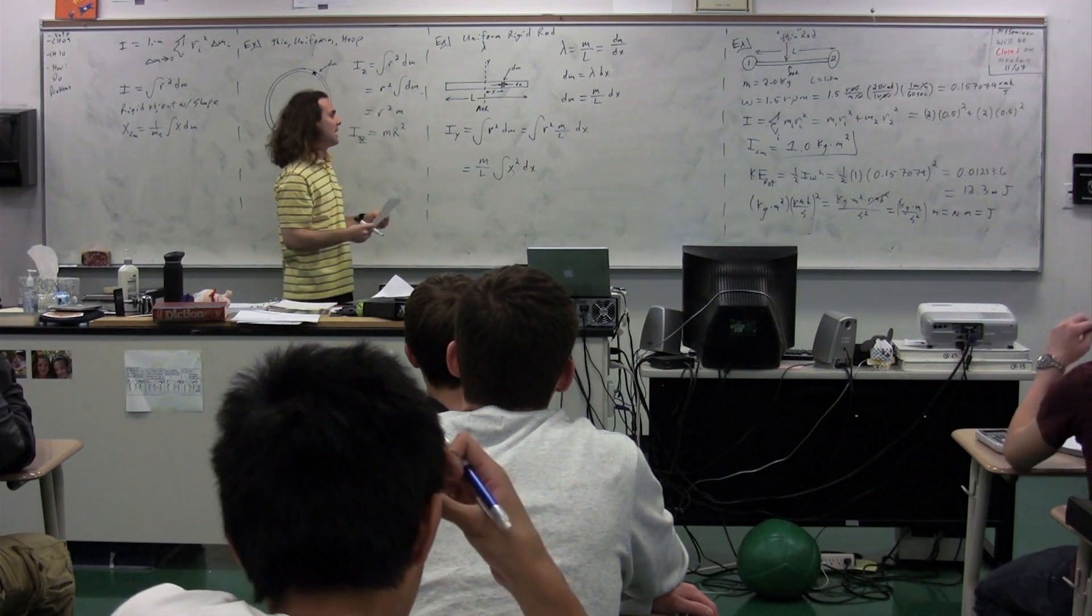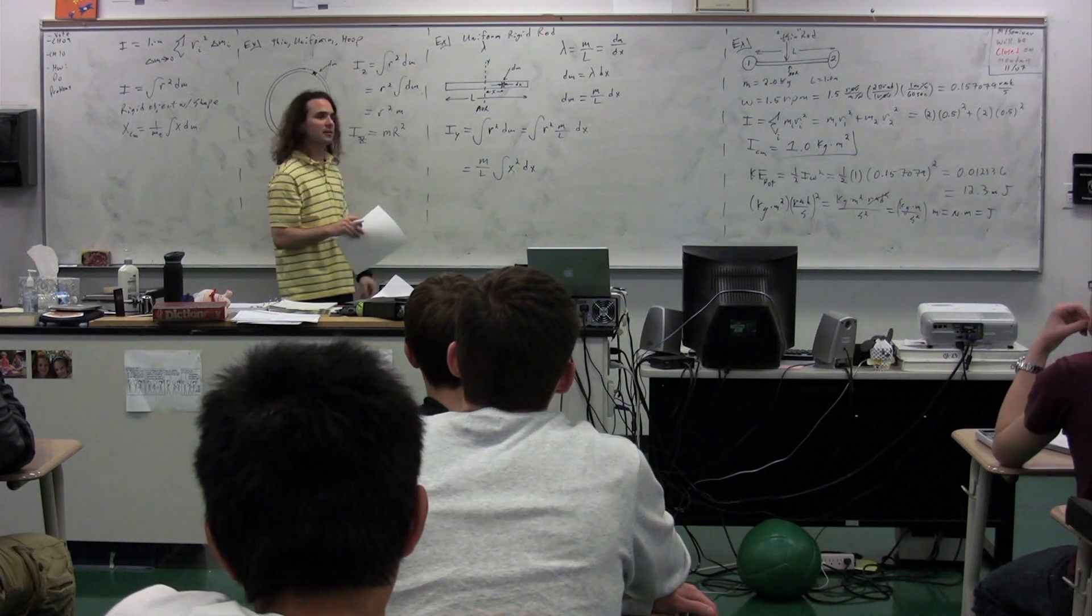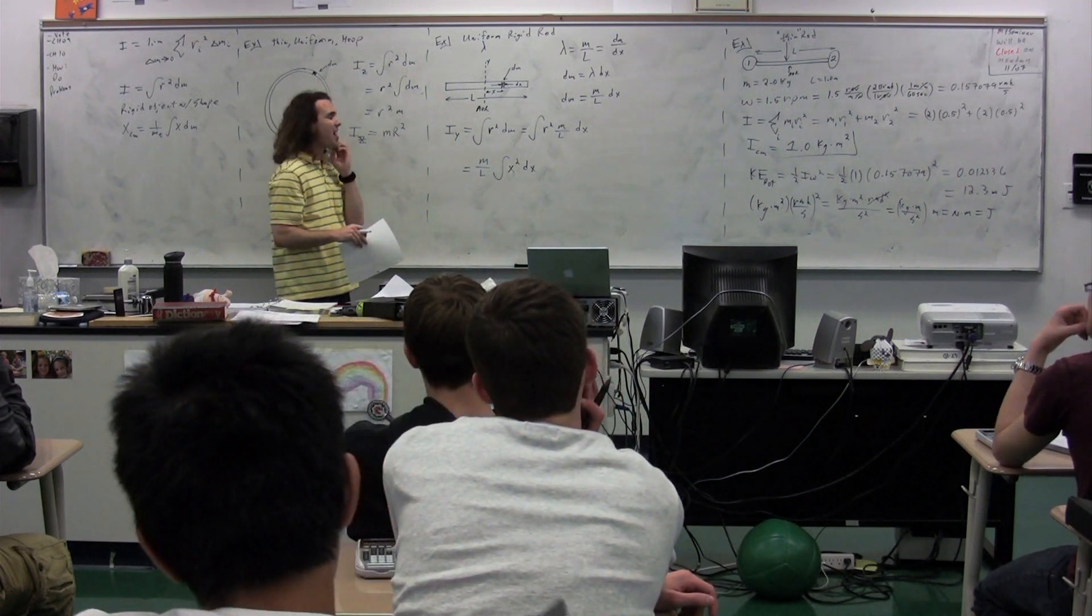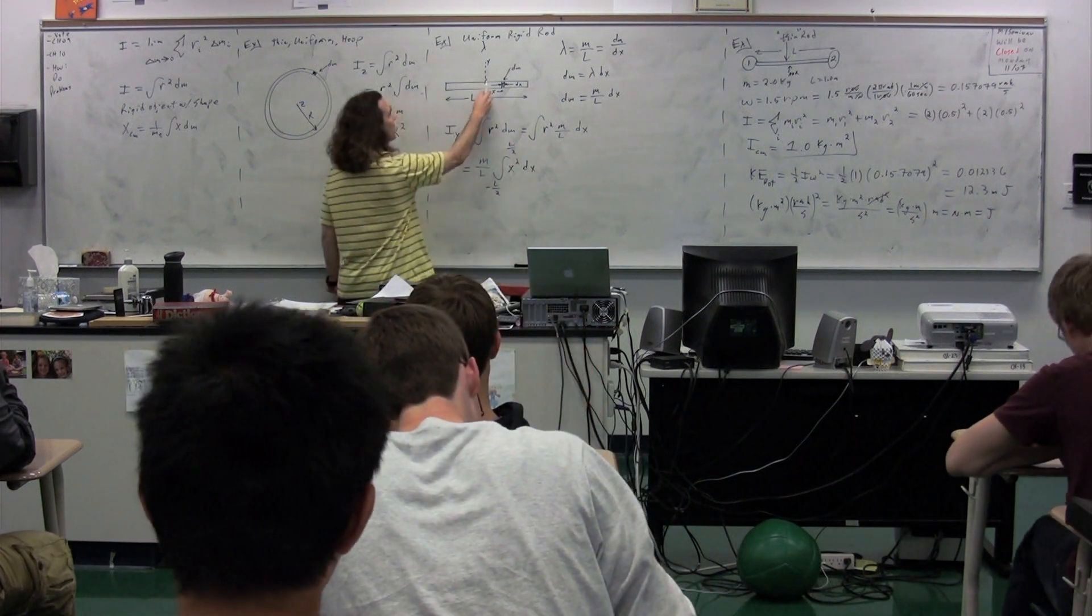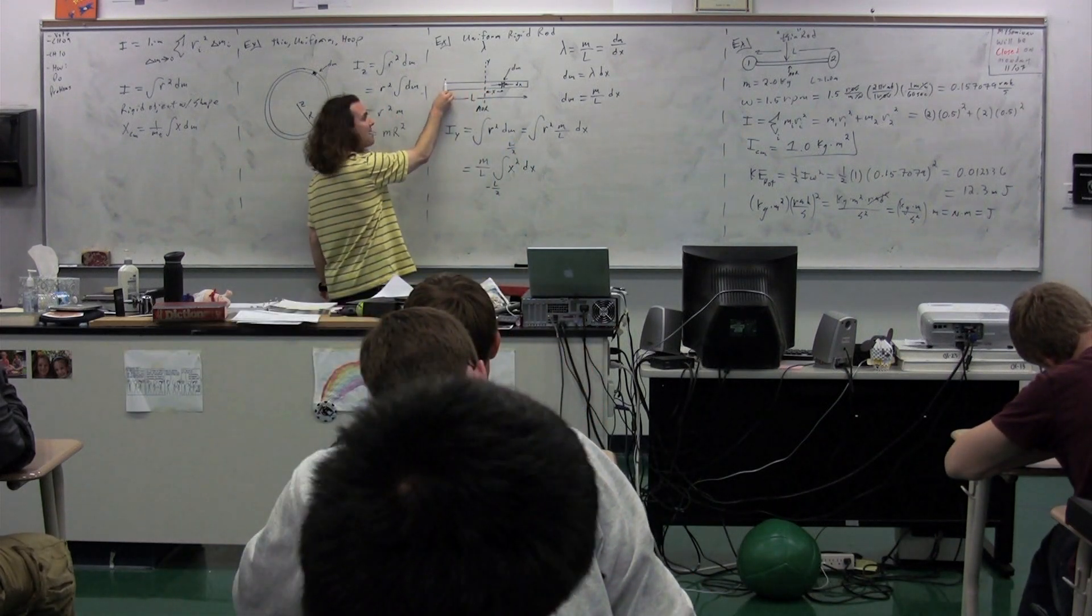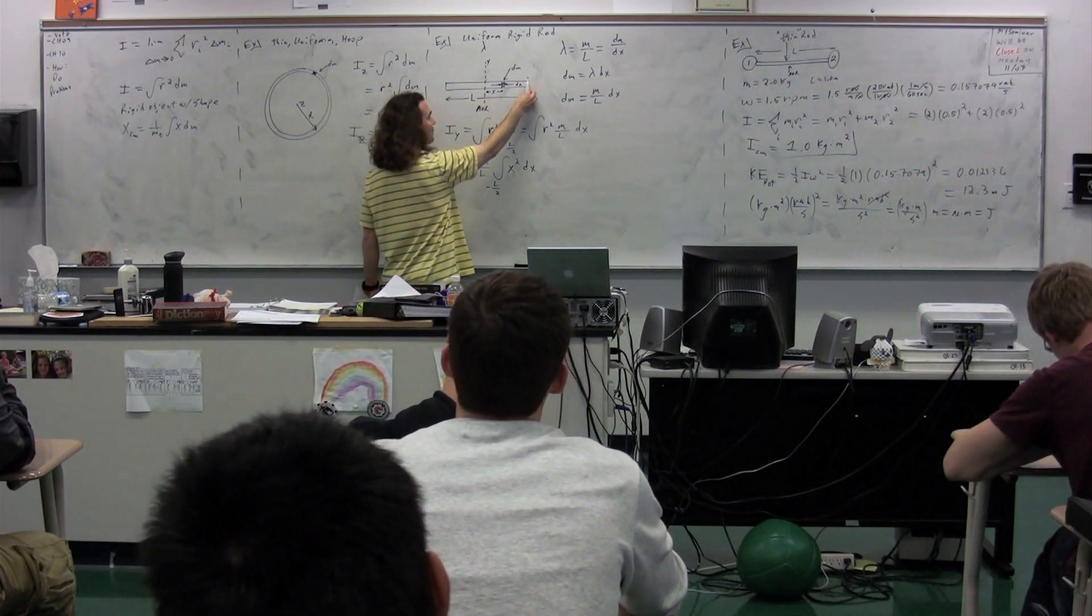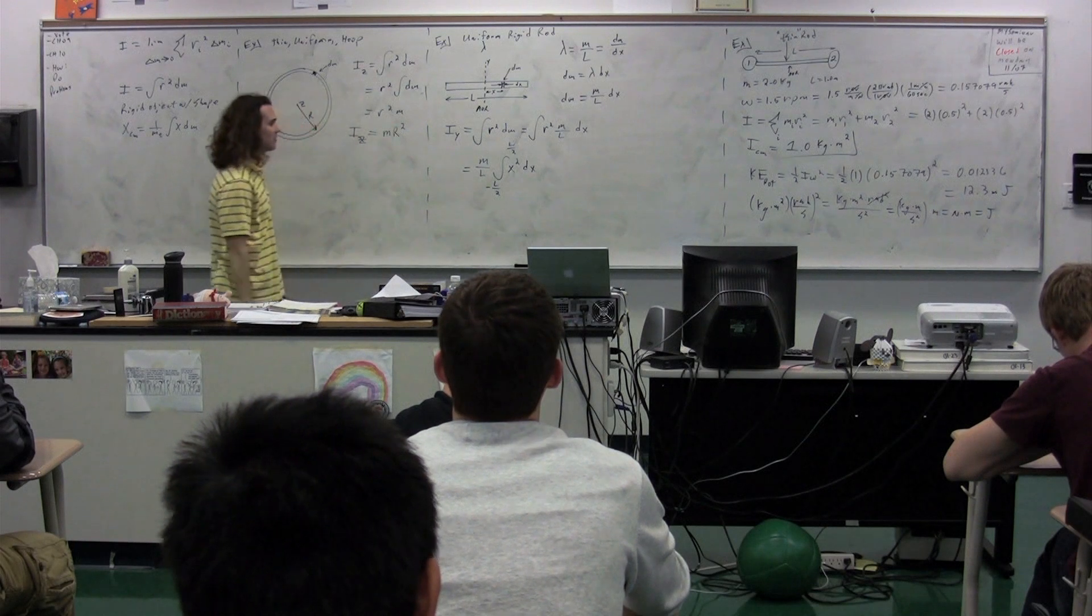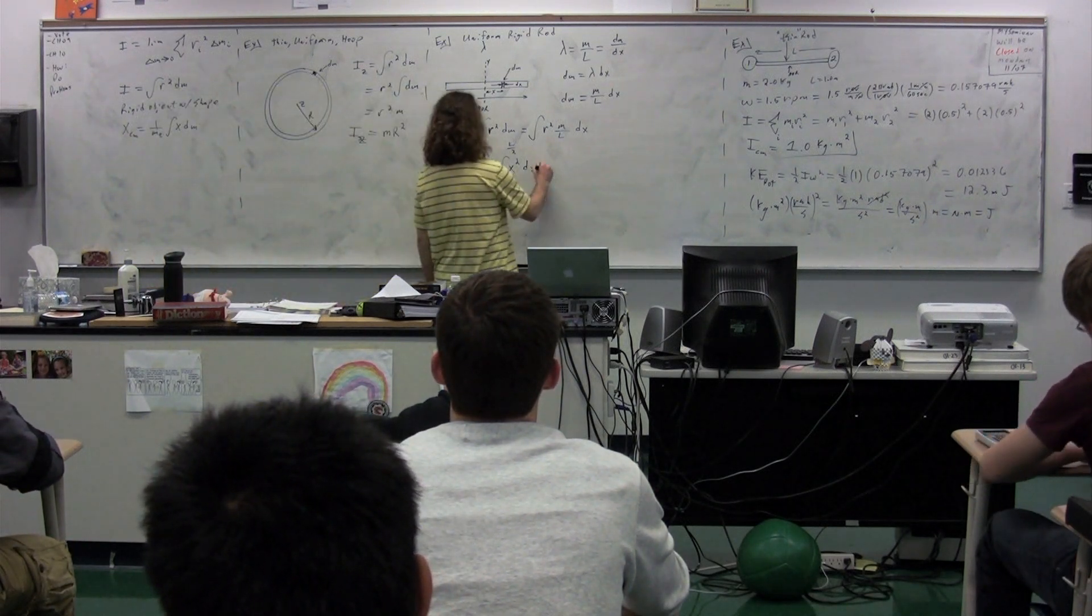So, now, what are the limits on this integral then? We go from one half of the length on the negative side to one half of the length on the positive side. So the limits are from negative L over 2 to L over 2. We take the integral. We get mass over length. It's going to be the integral x cubed over 3 from negative L over 2 to L over 2.